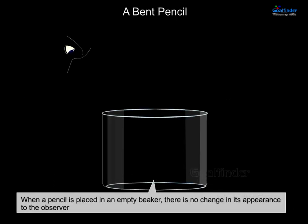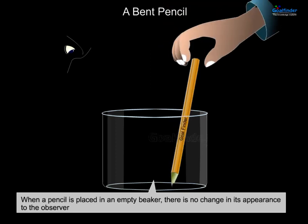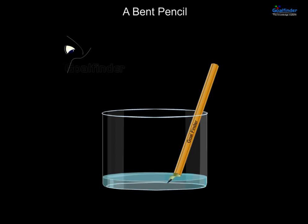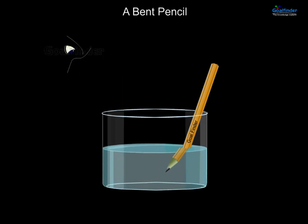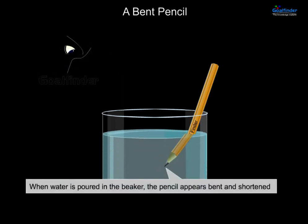A bent pencil. When a pencil is placed in an empty beaker, there is no change in its appearance to the observer. When water is poured in the beaker, the pencil appears bent and shortened.